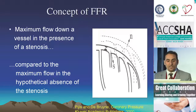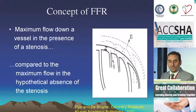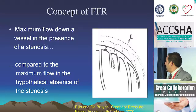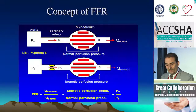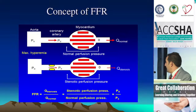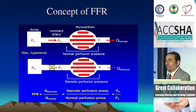Fractional flow reserve is a simple concept, actually, where they look at the maximum flow down a vessel in the presence of a stenosis and compare that theoretically to the flow when the stenosis is not present. When you cancel all these variables, the pressure distal to the stenosis over the pressure proximal to the stenosis gives you the fractional flow reserve.